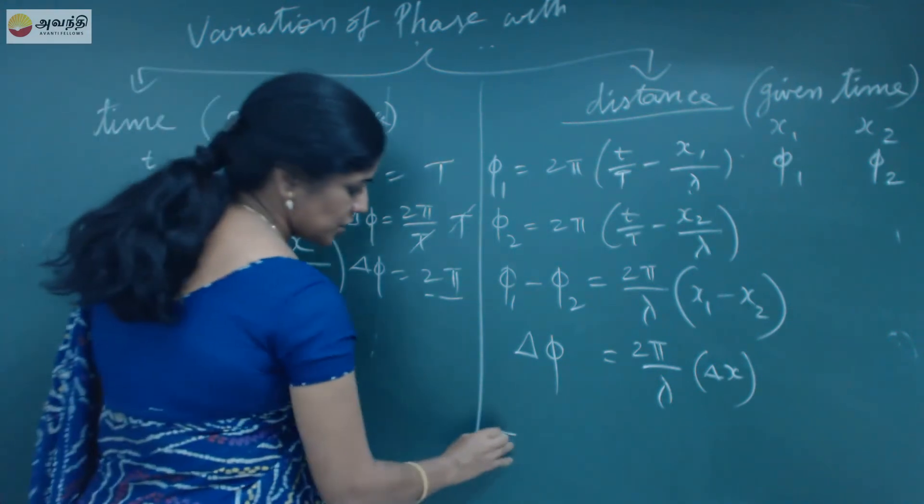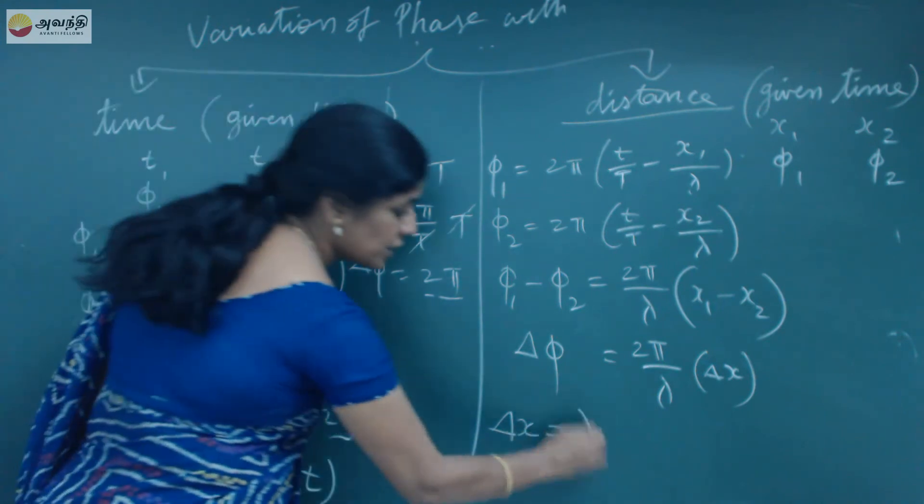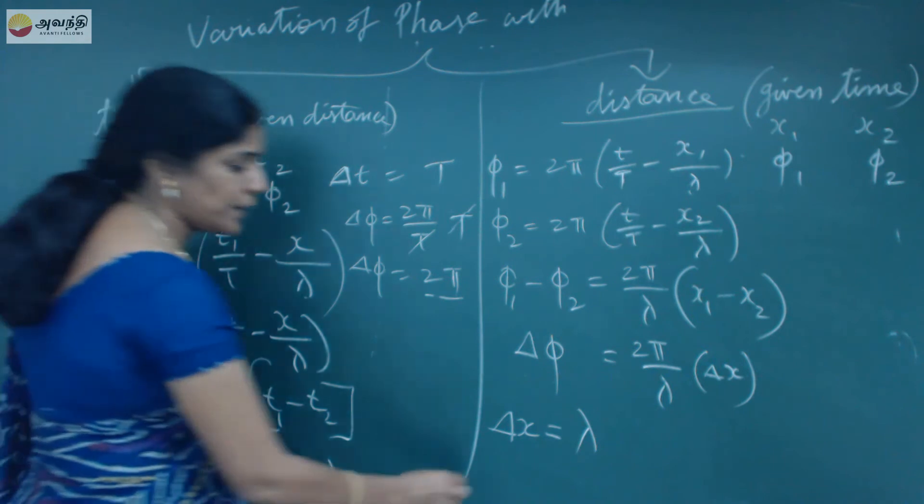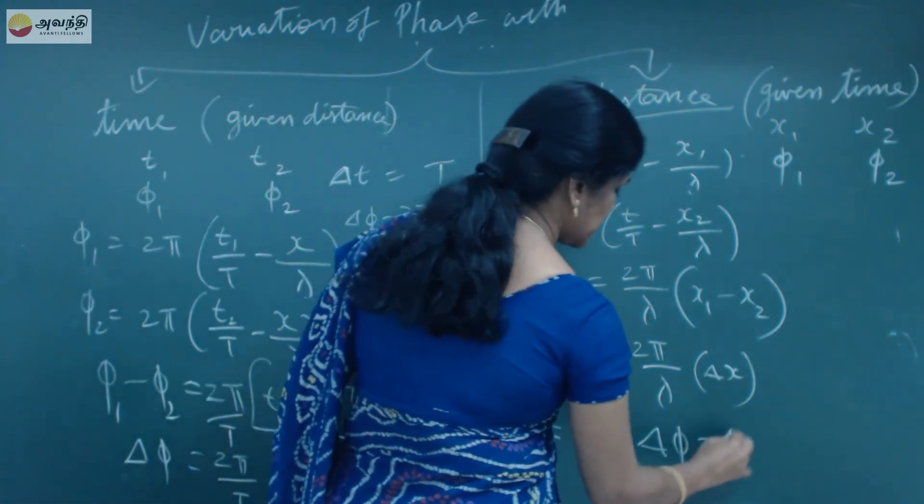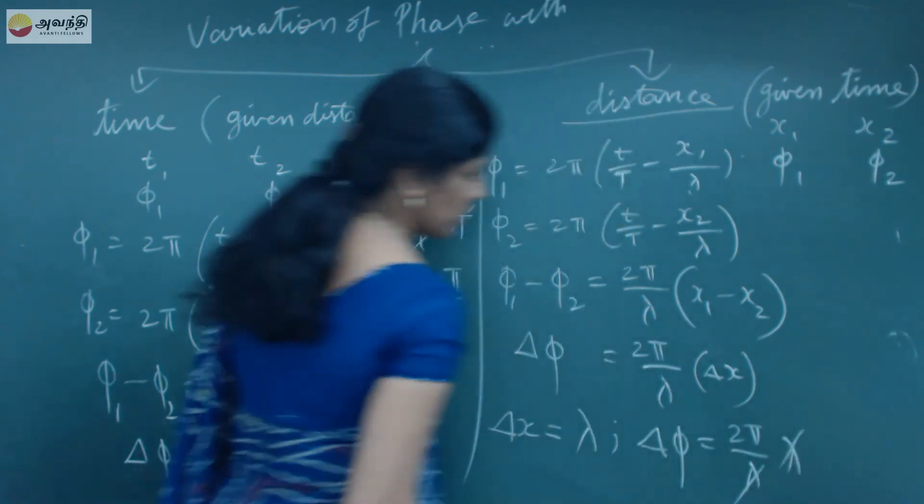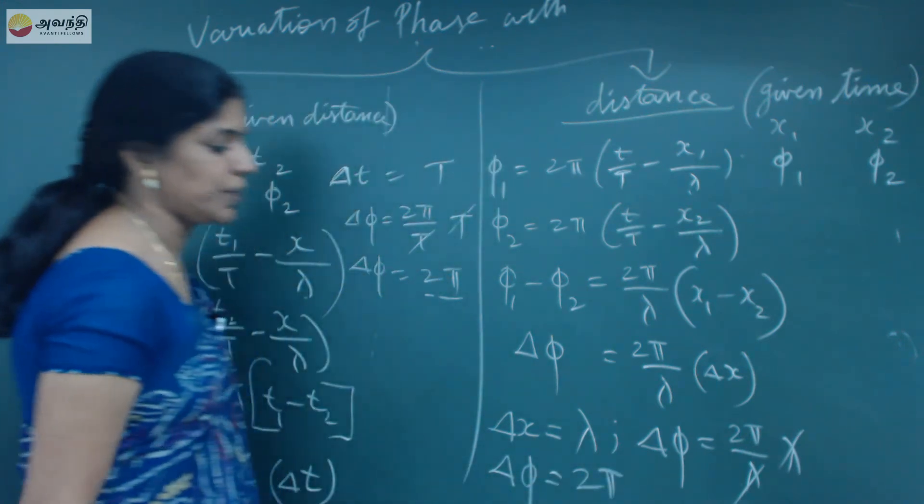Now, when this change in distance is equal to distance change. That if this becomes one wavelength, Δx is equal to λ. Then, at that time this change in phase is equal to 2π/λ into λ. So, again I will get this phase to be the same, that is 2π.